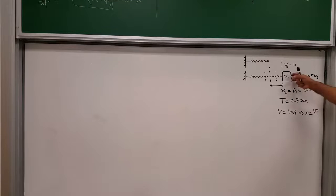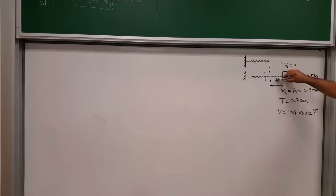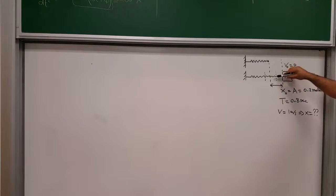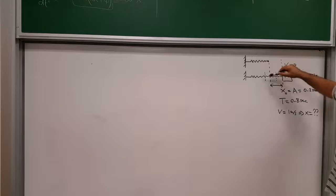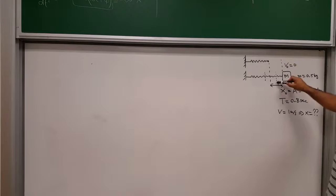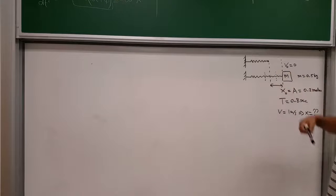The speed is initially 0 at the maximum displacement. As the mass approaches the equilibrium point, the speed increases. Assuming the maximum speed is larger than 1 m/s, there will be two points — one on either side of equilibrium — where the speed equals 1 m/s. So what is x at those points?